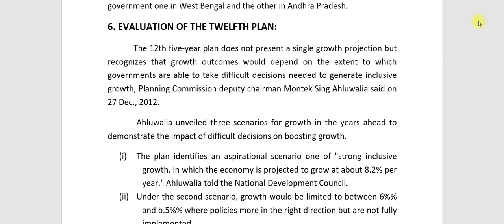First: the plan identifies an aspirational scenario — one of strong inclusive growth — in which the economy is projected to grow at about 8.2 percent per year. Ahluwalia told the National Development Council that strong inclusive growth was essential and this was the projected target.